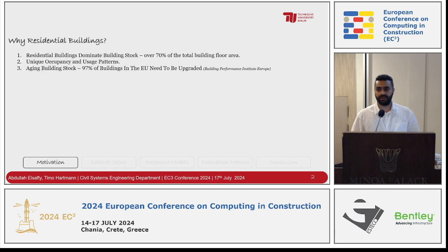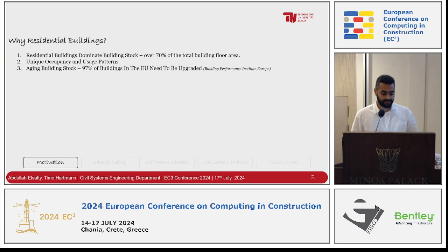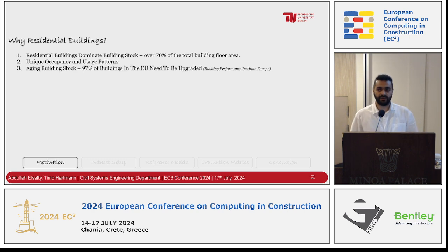Why do we target residential buildings? As we can see, residential buildings make up over 70% of our total buildings. According to the Building Performance Institute in Europe, 97% of buildings in Europe need to be renovated, which means it's really important to use techniques like laser scanning. Additionally, residential building usage varies based on occupancy and culture.